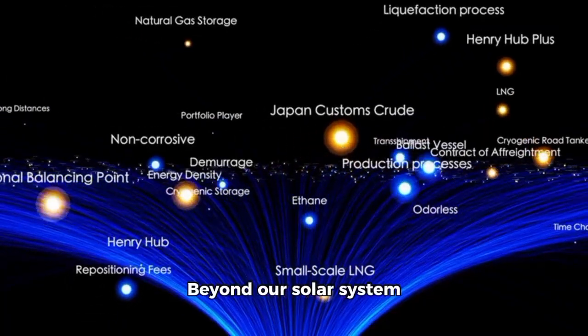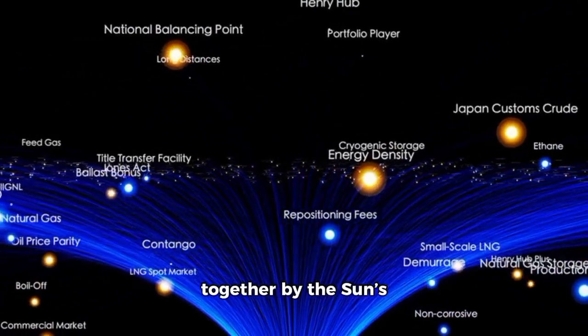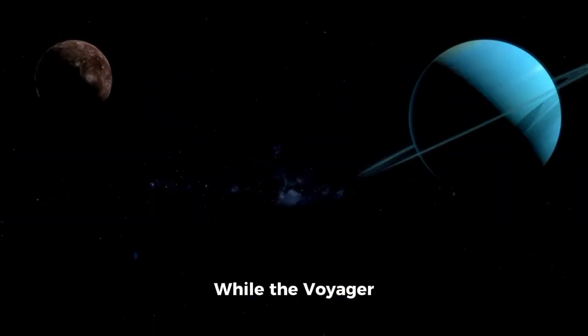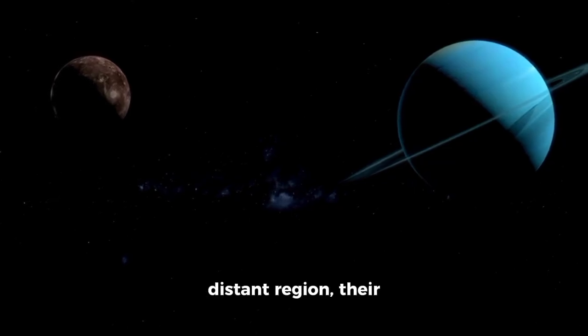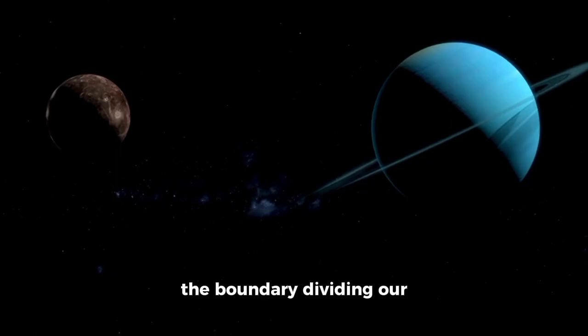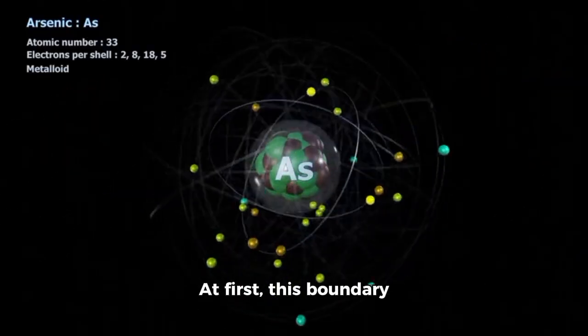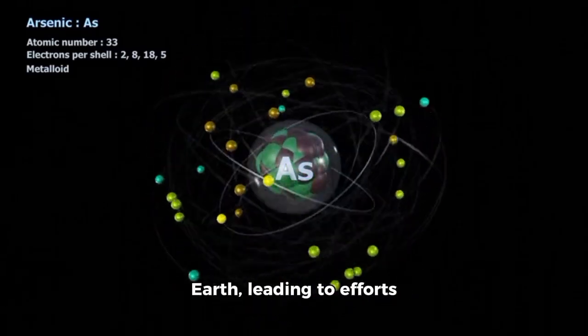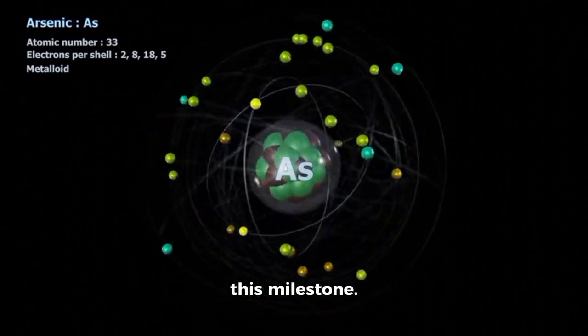Beyond our solar system lies a vast, enigmatic Oort cloud, a collection of comet-like objects held together by the Sun's gravity, stretching toward the nearest star. While the Voyager spacecraft continue to move slowly toward this distant region, their entry into interstellar space began when they crossed the Heliopause, the boundary dividing our solar system from the space between stars. At first, this boundary was believed to be around 50 astronomical units from Earth, leading to efforts to maintain the mission's funding as it approached this milestone.